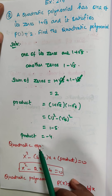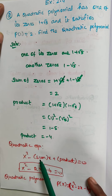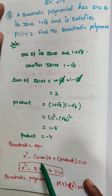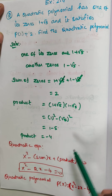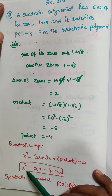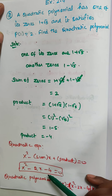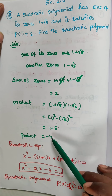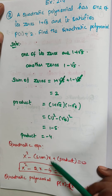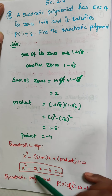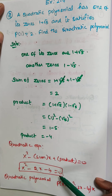We already know the quadratic equation formula: x square minus sum into x plus product equals 0. So substituting: x square minus 2x plus minus 4 gives x square minus 2x minus 4 equal to 0.